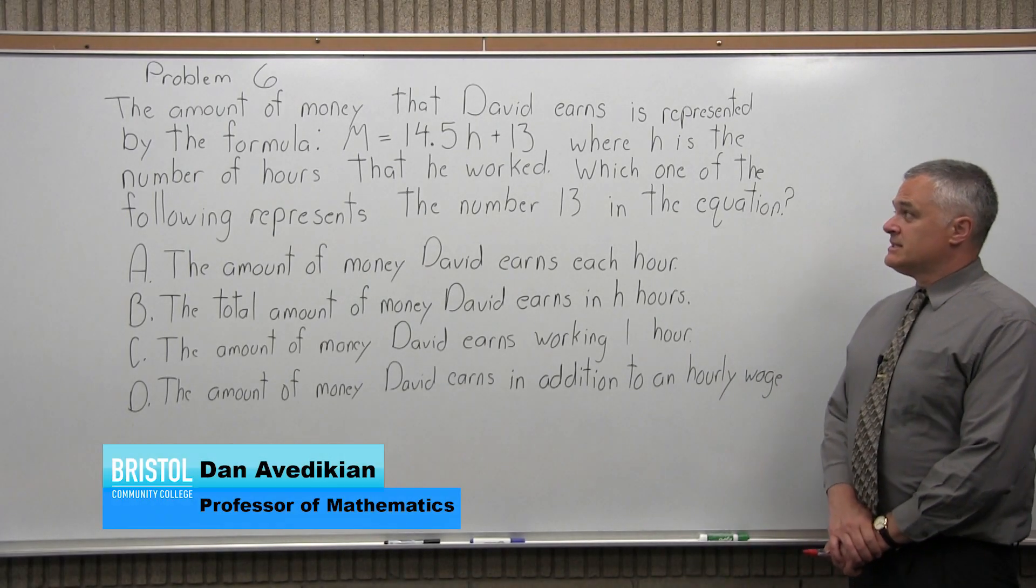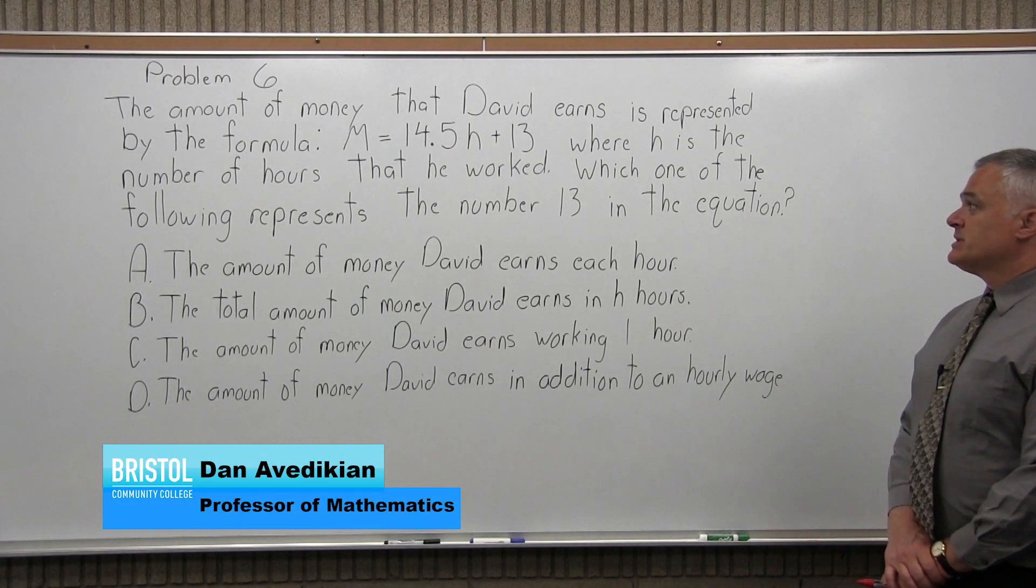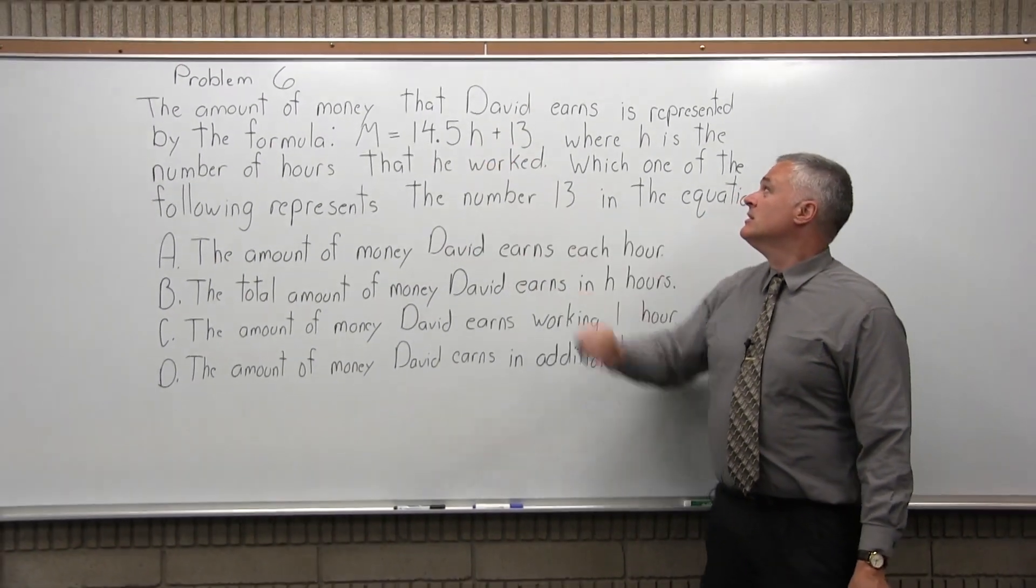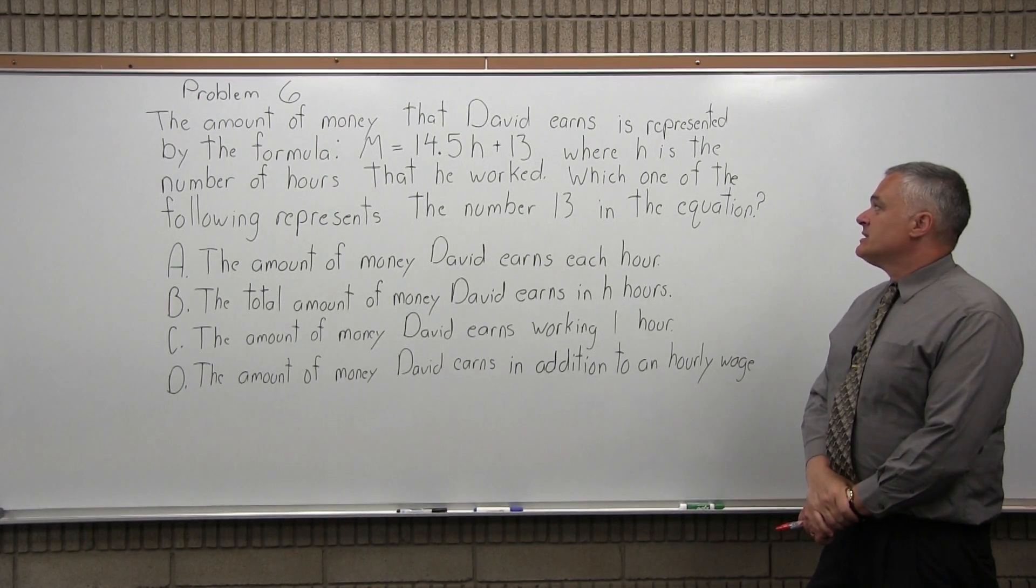This is Problem 6. The amount of money that David earns is represented by the formula M equals 14.5H plus 13, where H is the number of hours that he worked.